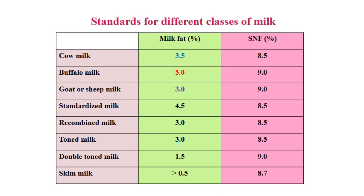Here are the standards for different categories of milk as per FSSAI. Cow milk requires 3.5 percent fat and 8.5 percent SNF. Buffalo milk requires 5 percent fat and 9 percent SNF. Sheep and goat milk require 3 percent fat and 9 percent SNF. Standardized milk requires 4.5 percent fat and 8.5 percent SNF. Recombined milk requires 3.0 percent milk fat and 8.5 percent SNF. Toned milk requires 3.0 percent fat and 8.5 percent SNF. Double toned milk requires 1.5 percent fat and 9 percent SNF. Skim milk must have less than 0.5 percent fat and 8.7 percent SNF.